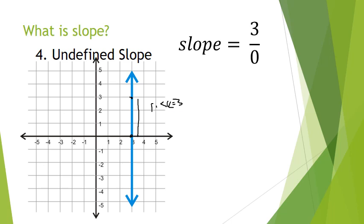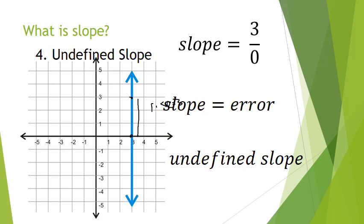If you take your calculator and enter that, it's going to give you an error. It's going to say that cannot be calculated. If you think about it, it's asking how many zeros are there in 3. That doesn't make any sense, so we call this the undefined slope.